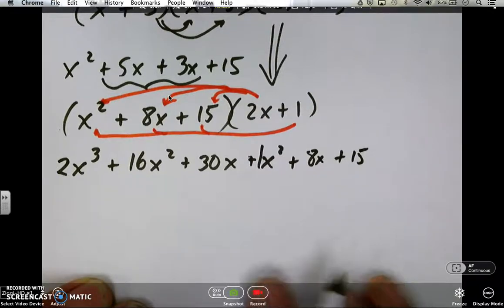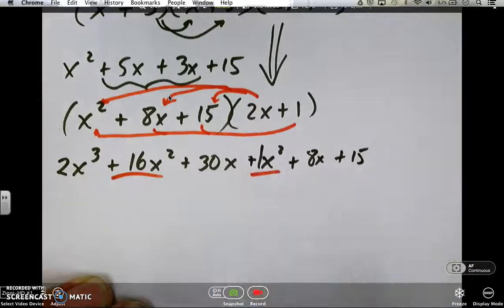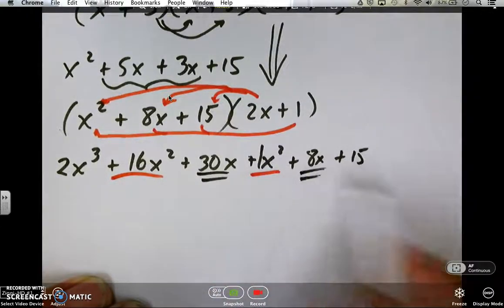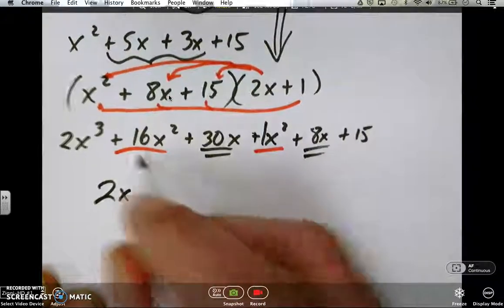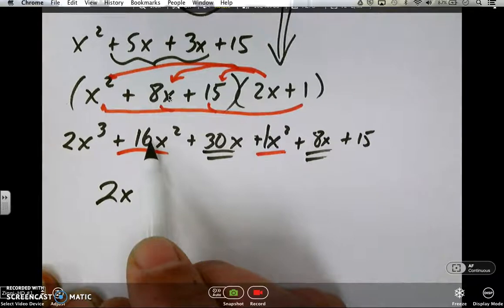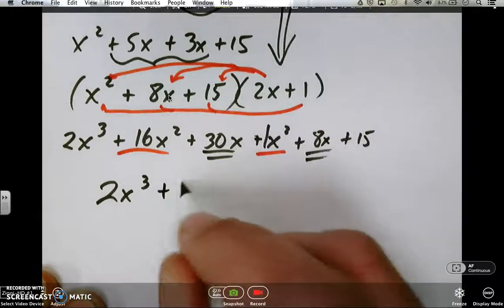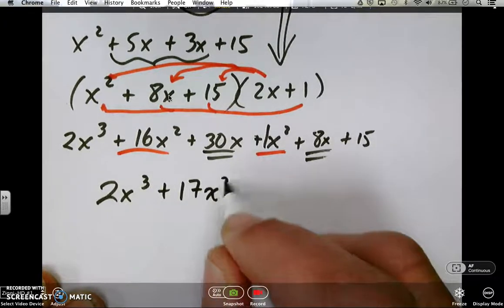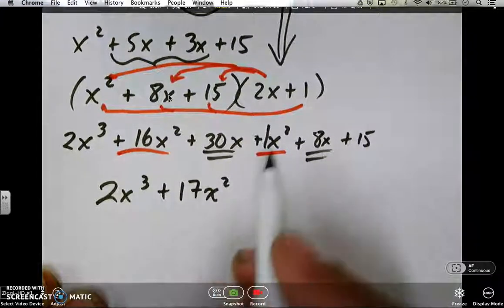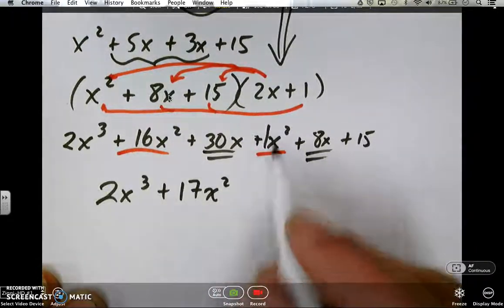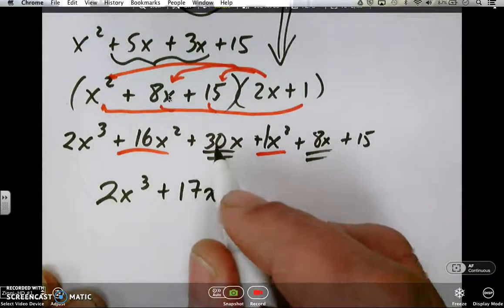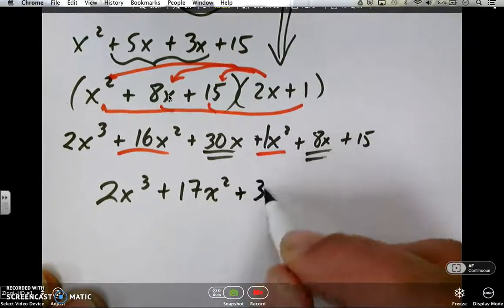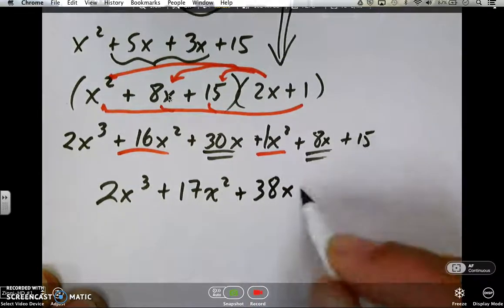Okay, so now we've got this giant thing. It does get better. These are the same, and these two are the same. So we can combine those. 2x cubed, then the 16x squared plus the 1x squared gives you 17x squared. The exponents don't change because we're adding together just 16 of these plus one of these is 17 of these. Same thing here. 30x plus 8x gives you 38x and plus 15.